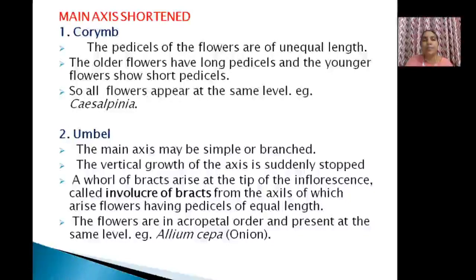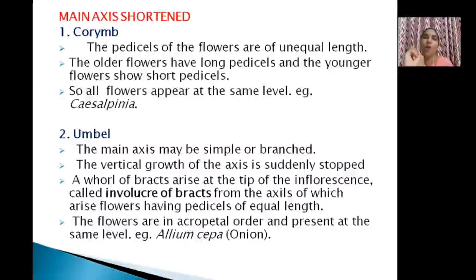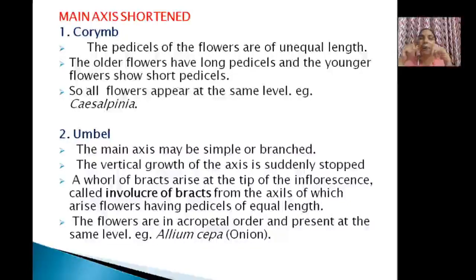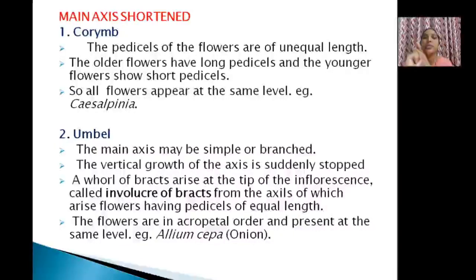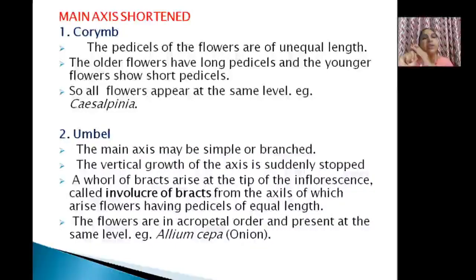To summarize racemose inflorescence: the axis continues to grow (unlimited growth), basal flowers are larger and older, upper flowers are younger, flowers arranged in acropetal succession, and flowers open in centripetal fashion. Under main axis elongated we discussed: simple raceme, compound raceme or panicle, spike, compound spike, and spadix.